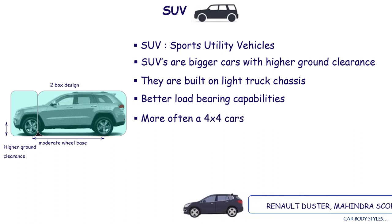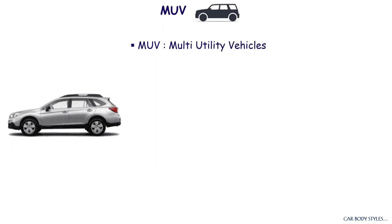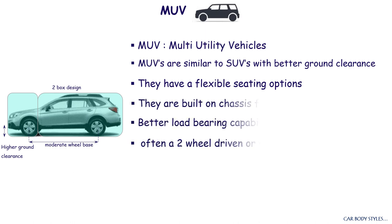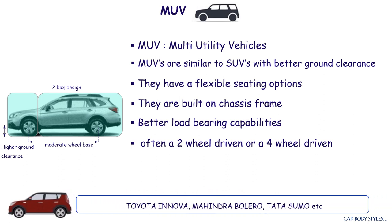SUV and MUV. Common examples of SUV vehicles are Renault Duster, Mahindra Scorpio, Ford Endeavour, Fortuner, and so on. MUVs are popularly addressed as multi-utility vehicles. MUVs are similar to SUVs with flexible seating options. They are generally built on a chassis frame, which ensures large load-carrying capacities. Common examples of MUV vehicles are Tata Sumo, Mahindra Bolero, and Toyota Innova.